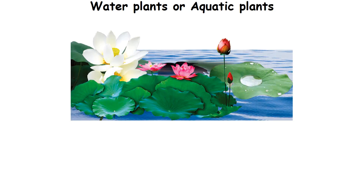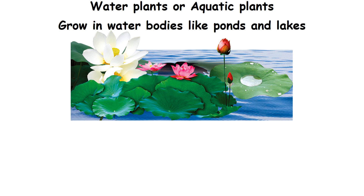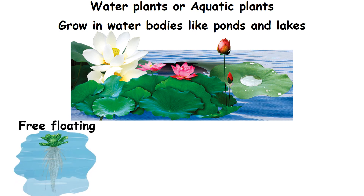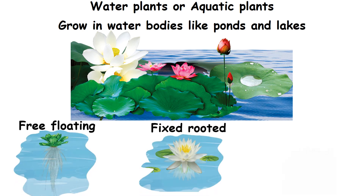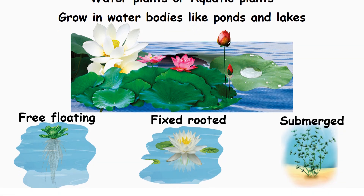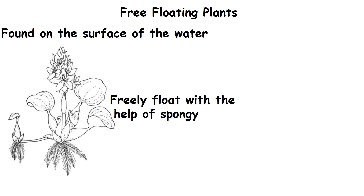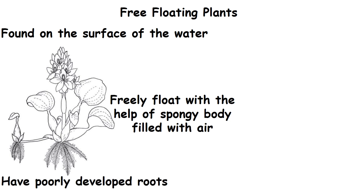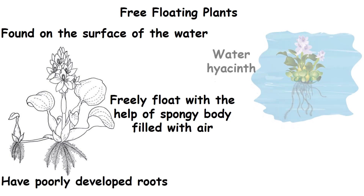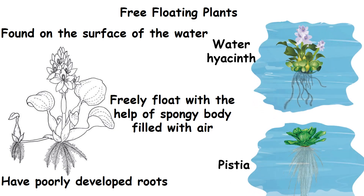Water plants or aquatic plants. These plants grow in water bodies like ponds and lakes. They are classified into free-floating plants, fixed-rooted plants and submerged plants. Free-floating plants are found on the surface of the water. They freely float with the help of a spongy body filled with air. They have poorly developed roots. Example: water hyacinth and pistia.